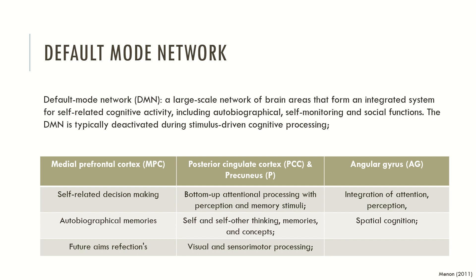The default mode network also has ramifications to the posterior cingulate cortex and precuneus, which are brain areas responsible for bottom-up attentional processing, perception and memory stimuli, self and other thinking, thinking about memories and concepts, and visual and sensory motor processing. It also has some ramifications to the angular gyrus, which is responsible for integration of attention and perception, and also for spatial cognition.